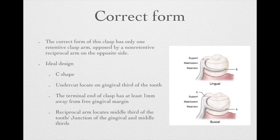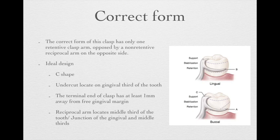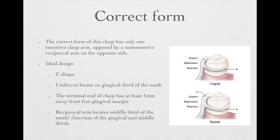The correct form for the circumferential clasp has one retentive clasp arm opposed by a non-retentive reciprocal arm on the opposing side. The retentive arm should look like a C-shape. The undercut should be located in the gingival third of the tooth because it is close to the root. However, to prevent disturbance to the gingival margins, the terminal end of the clasp should be at least 1 mm away from the gingival margin. The reciprocal arm should be located in the middle third or junction of the gingival and middle third.